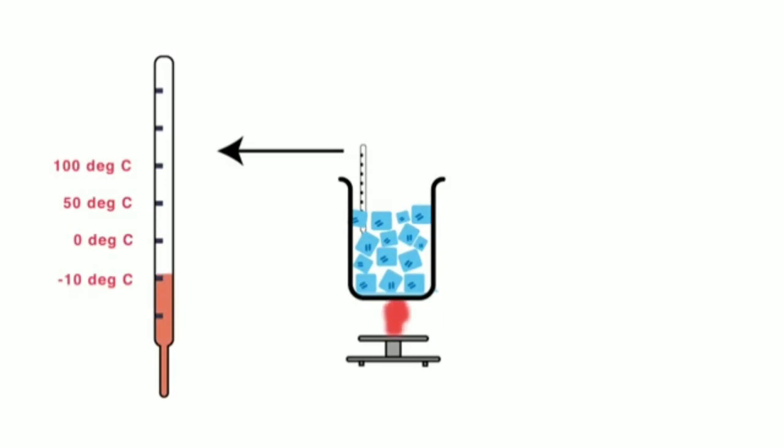In the last video we saw that when we heat ice in a beaker, the temperature rises till the melting point of ice, that is 0 degrees Celsius. Once this temperature is reached, the temperature does not increase till all the ice melts to water, even though heat is continuously supplied.